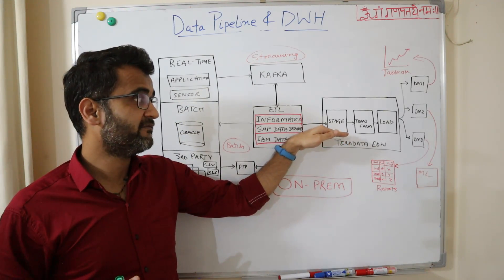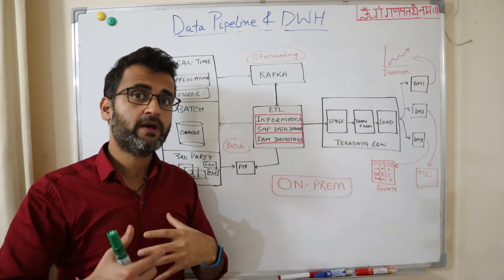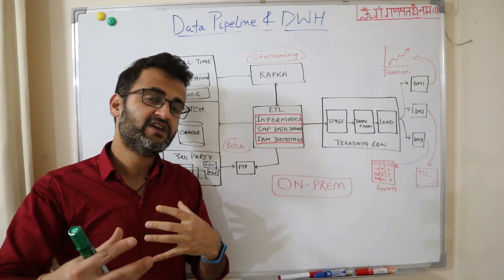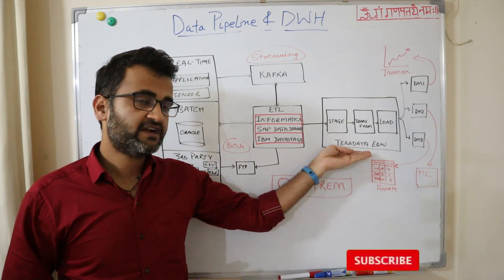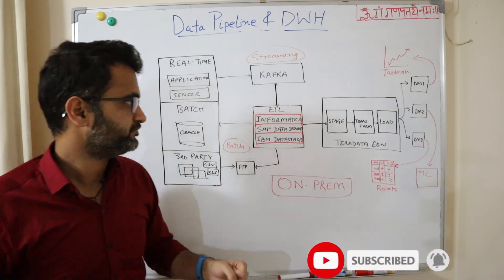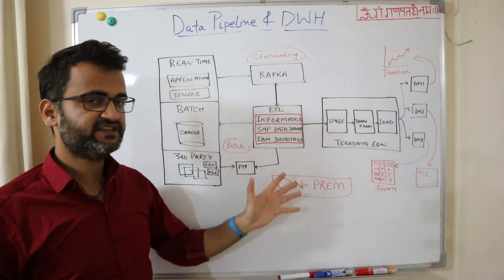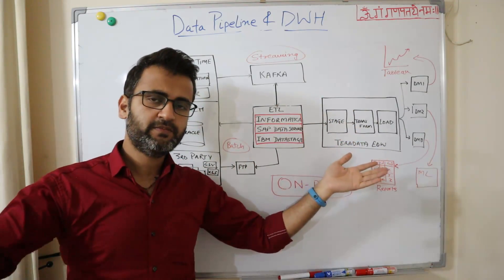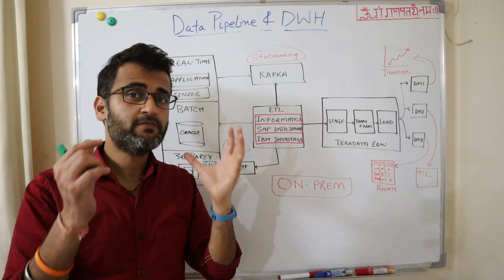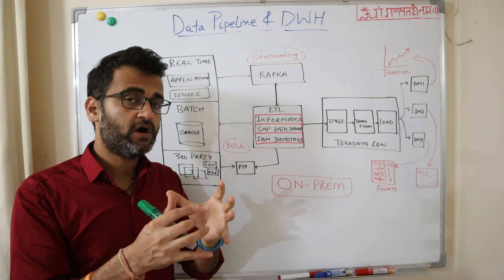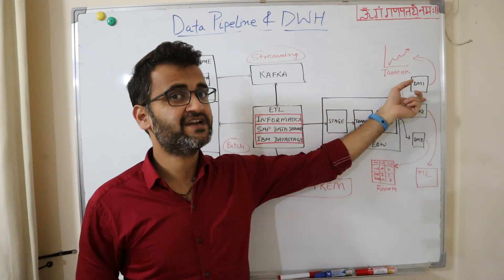Inside your enterprise data warehouse you can have multiple layers. The first layer is the staging layer where you store completely raw data. Then there is a transformation layer where you apply business logic, and eventually a final loading layer where you load exactly the data you want. In our case this is being done on a Teradata database, which is playing the role of our enterprise data warehouse.